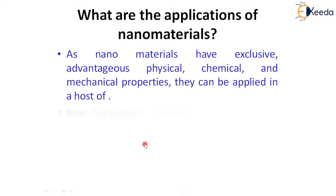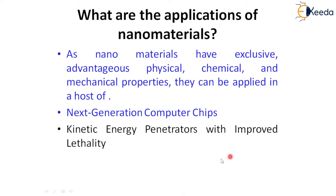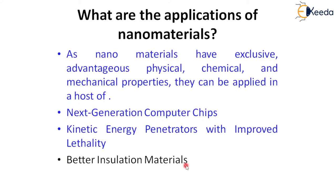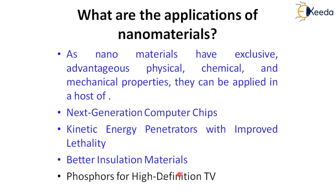A lot of products are made with nanomaterials. Next generation computer chips can be made with nanomaterials. Kinetic energy penetrators with improved authority — meaning with high power we can make a product that can penetrate in a faster manner — are also possible. Nanomaterials also serve as better insulation materials compared to others already available in the market, and as phosphors for high definition TV.